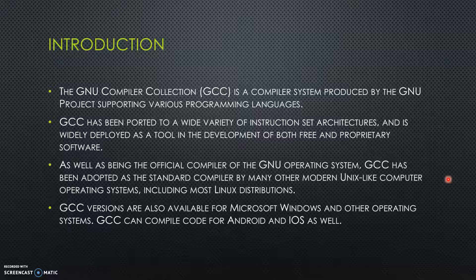It can target a wide variety of platforms, including but not limited to several kinds of embedded systems. It is the official compiler of the GNU OS and has also been adopted as the standard compiler for most modern Unix-like operating systems, including most Linux distributions. GCC also has working versions available for Windows, Android, and iOS. The BSD set of operating systems and Mac OS also used GCC for a period of time, but later switched to other compilers for a different set of reasons.